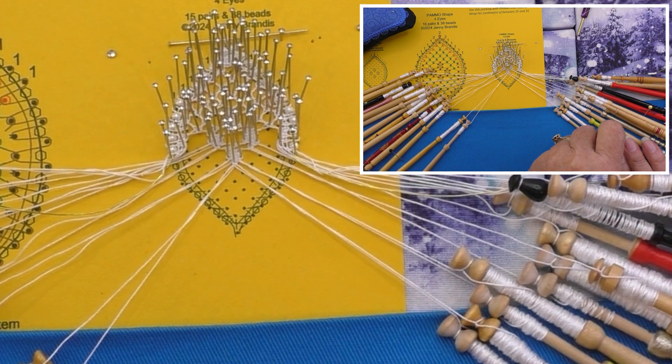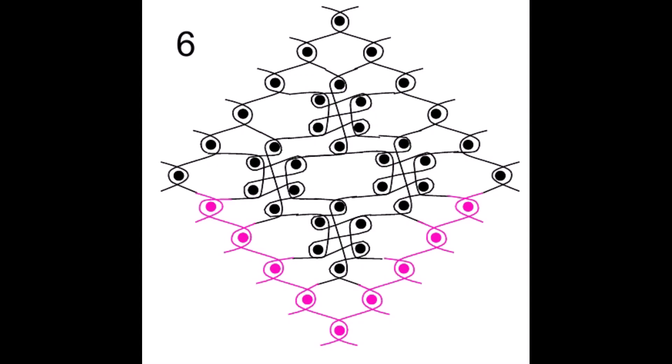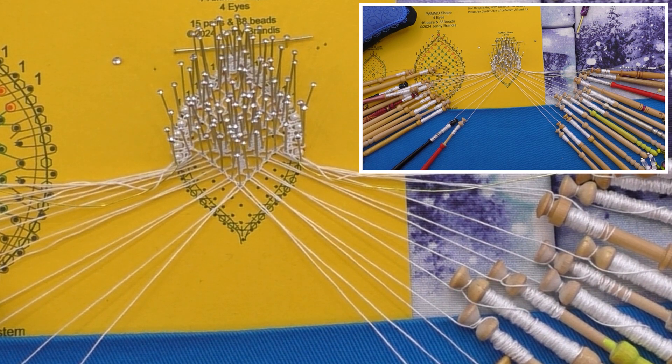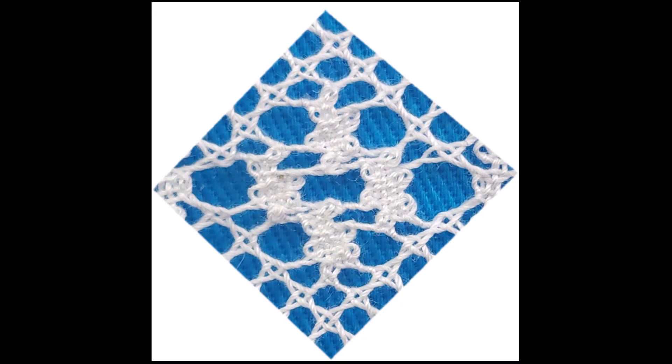Work the remaining three cloth stitch buds in the same manner. Using the corner pairs from step one, work the outgoing pin row in half stitch, pin, half stitch. And there you have it.